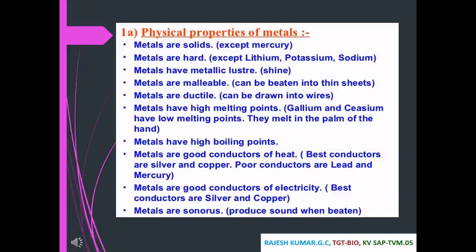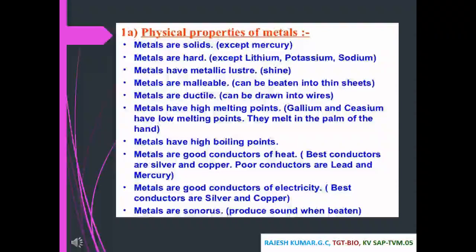Physical properties of metals: metals are solids except mercury. Metals are hard except lithium, potassium, and sodium. Metals have metallic luster — they are shiny. Metals are malleable — they can be beaten into thin sheets; gold is an example. Metals are ductile — they can be drawn into wires; copper wire is an example.